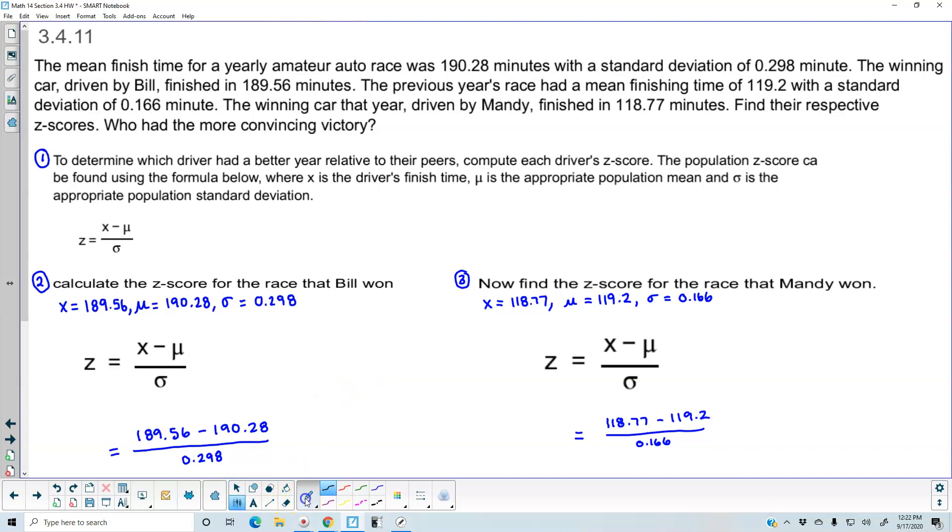In step number two, we want to calculate the z-score for the race that Bill won. Well, the race that Bill won, he finished with 189.56 minutes. So that means that the data value x is going to equal 189.56. Now the mean finish time of his race was 190.28 minutes, so the population mean mu is 190.28. And the standard deviation of that race was 0.298 minutes.